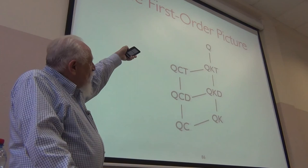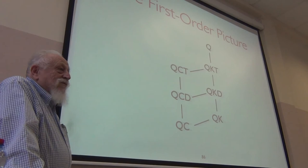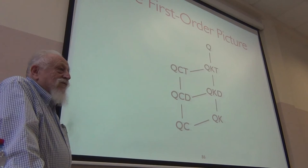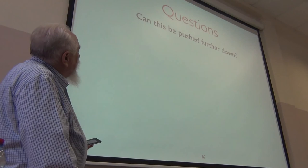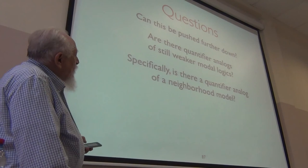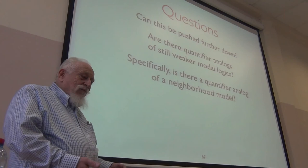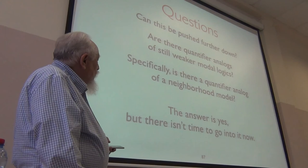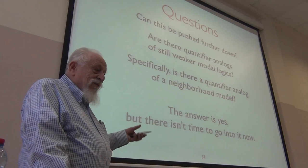So we've got this structure: Q is first order classical logic, and various sublogics of it — a lattice of them. The analogs of the normal logics and the analogs of the regular ones. Some of these are known to be decidable, Q is known not to be, some are unknown. All of them have the interpolation property. The question is: can this be pushed even further down? Are there quantifier analogs of still weaker modal logics — like neighborhood models? Yes, there are analogs of the quantificational versions analogous to modal logics requiring neighborhood semantics.